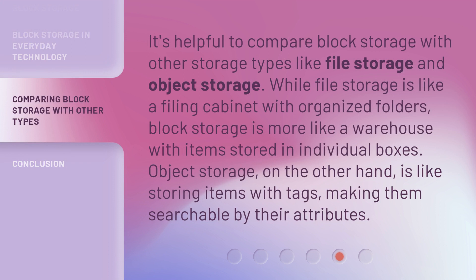It's helpful to compare block storage with other storage types like file storage and object storage. While file storage is like a filing cabinet with organized folders, block storage is more like a warehouse with items stored in individual boxes. Object storage, on the other hand, is like storing items with tags, making them searchable by their attributes.